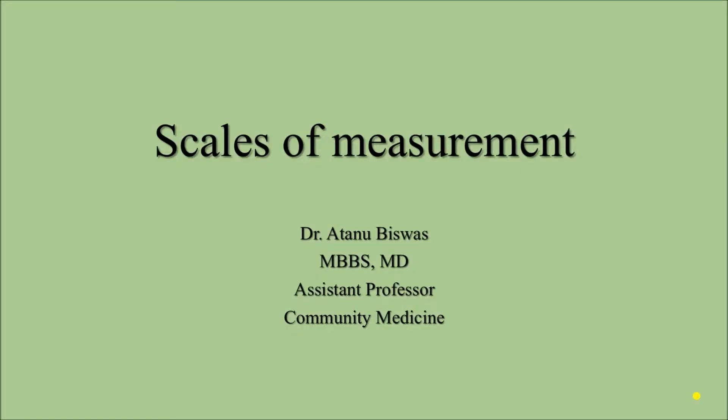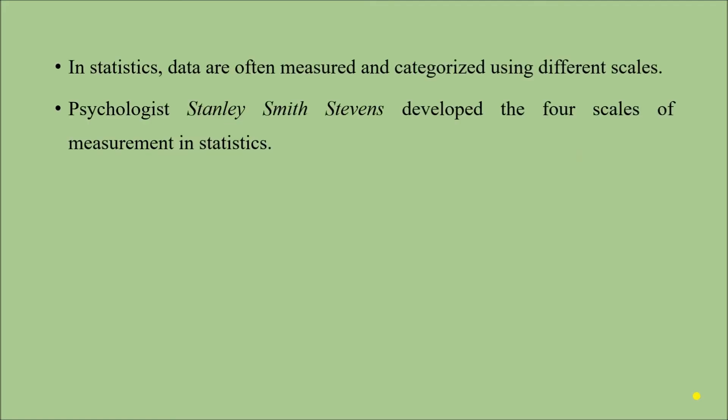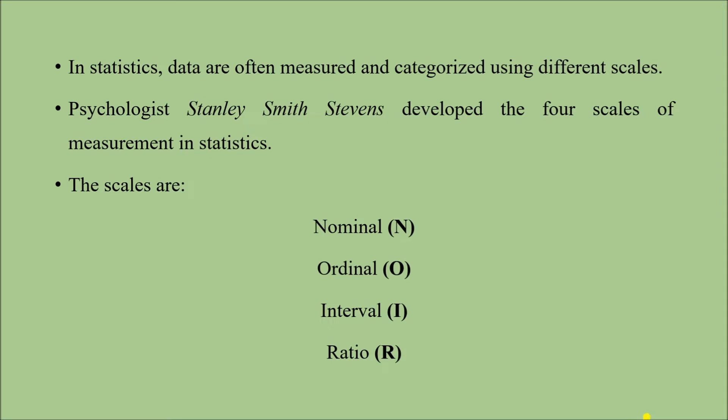Today we shall be talking about different scales of measurements in biostatistics. In statistics, we often make observations or measurements which comprise the data. This data can be categorized using different kinds of scales. American psychologist Stanley Smith Stevens developed the most popular and universally accepted four scales of measurements used in statistics. These scales are nominal scale, ordinal scale, interval scale, and ratio scale.